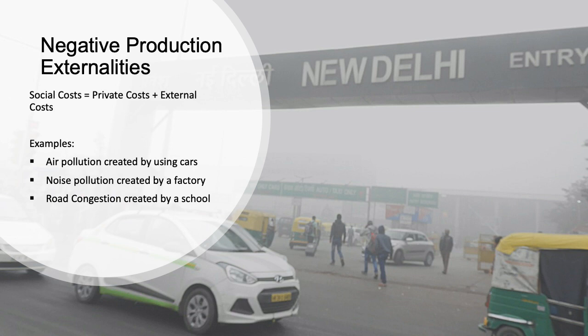Negative production externalities exist when production creates external costs. A good example is air pollution — a car company produces cars, a consumer buys and uses that car, and while using it they create air pollution. Another great example is noise pollution created by a factory — when businesses produce goods or services using a factory, noise is created in the process.